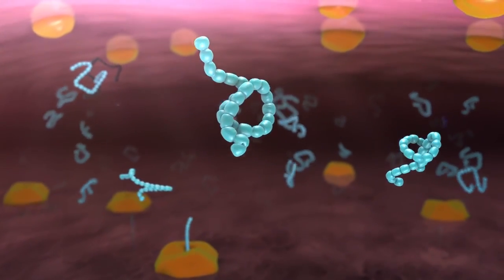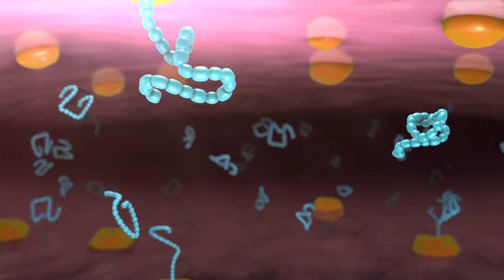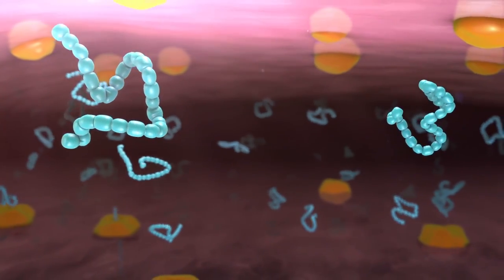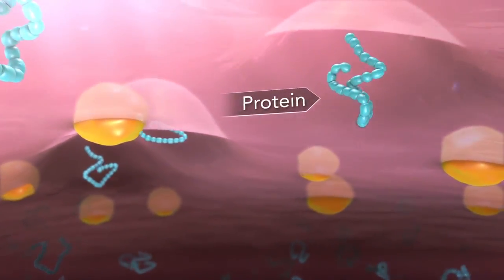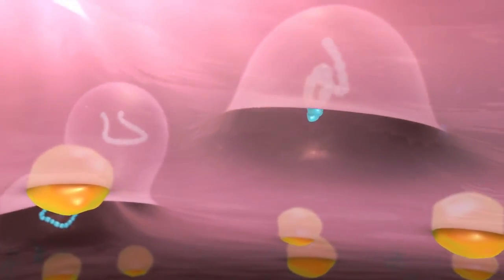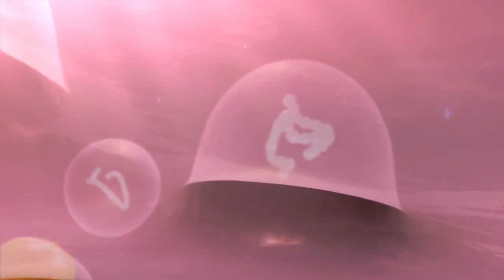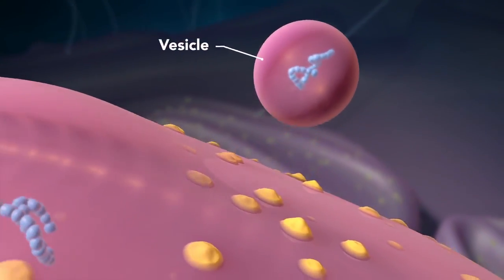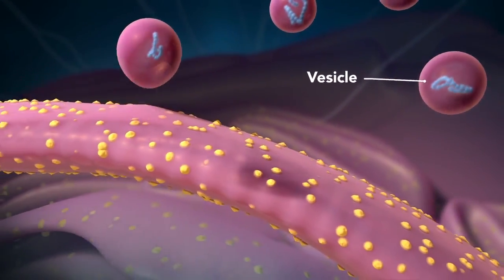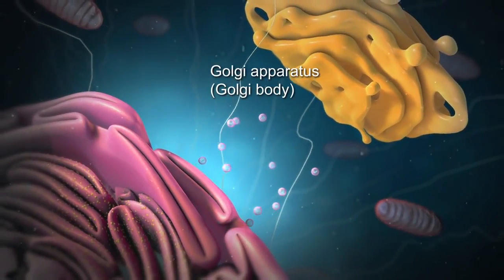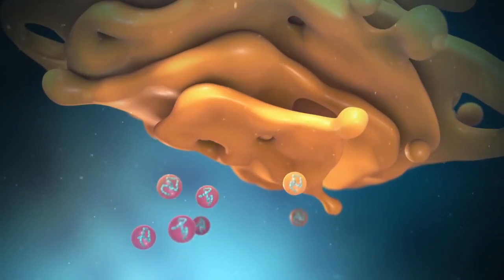The endoplasmic reticulum is a membrane-enclosed passageway for transporting materials, such as the proteins synthesized by ribosomes. Proteins and other materials emerge from the endoplasmic reticulum in small vesicles, where the Golgi apparatus, sometimes called the Golgi body, receives them.